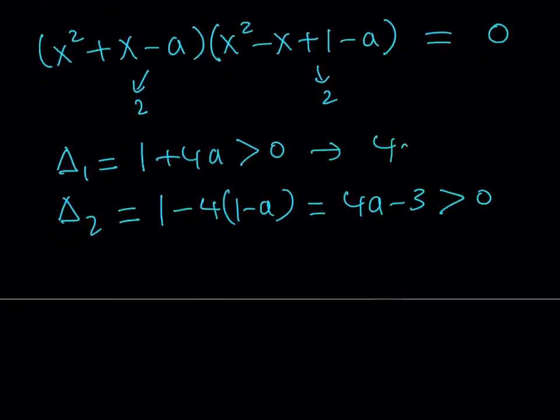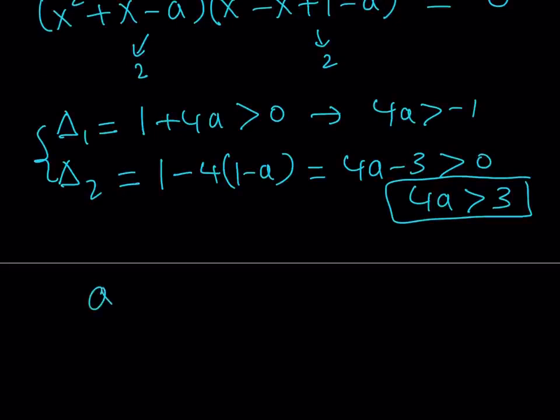Now, the first thing tells me 4A must be greater than negative 1. This tells me 4A must be greater than 3. And we're going to be looking at the intersection because both of them have to be satisfied. So this means 4A needs to be greater than 3, which means A needs to be greater than 3 fourths.